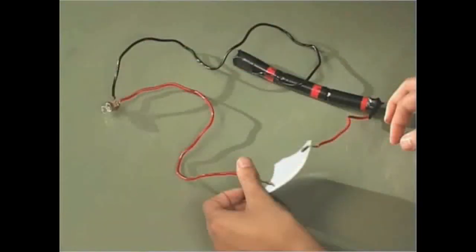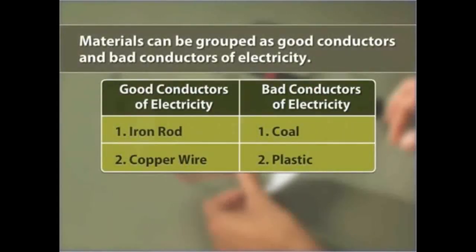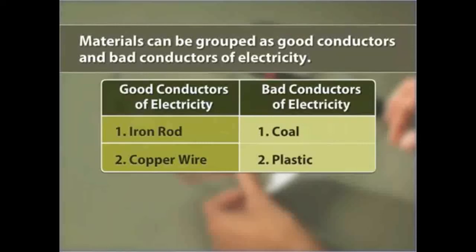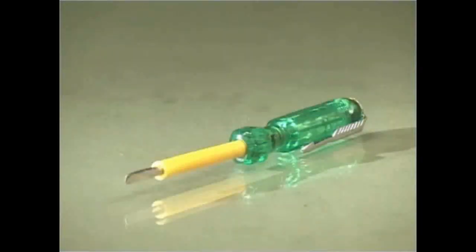On repeating the same activity with copper wire, you will see that the bulb glows. On the other hand, when a piece of plastic is connected between the open ends, the bulb does not glow. Based on these observations, materials can be grouped as good conductors and bad conductors of electricity. Metals like iron rod and copper wire are good conductors, while coal and plastic are bad conductors. This is why a tester is insulated with plastic — to protect the holder from electric shock.